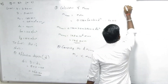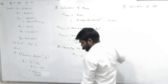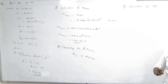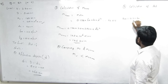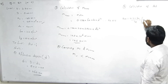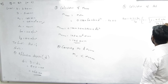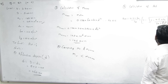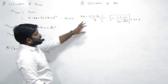Step number 4: calculation of AST — area of steel. AST ka formula yaad hai? Formula: 0.5 × (FCK/FY) × [1 - √(1 - 4.6×MU / (FCK × B × d²))] × B × d. Yeh formula important hai — IS code mein nahi hai, lekin throughout subject lagta hai.